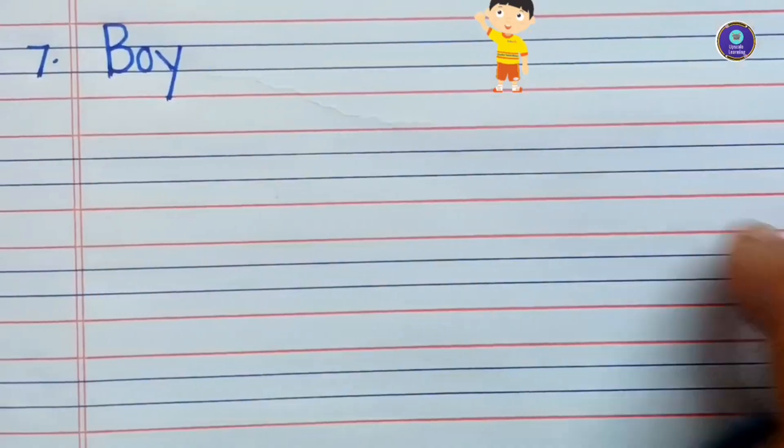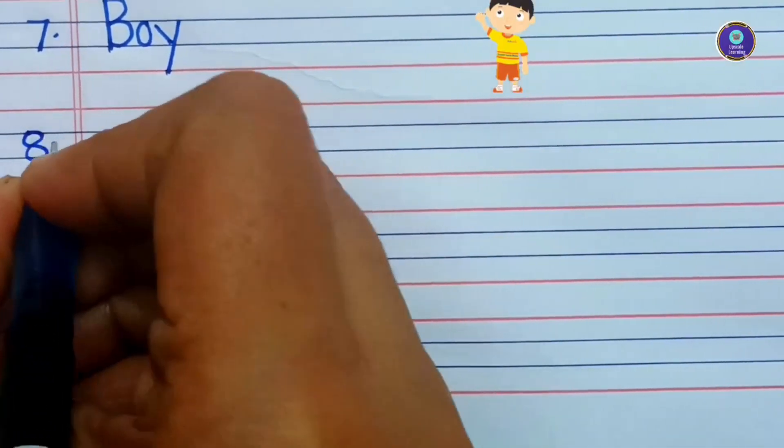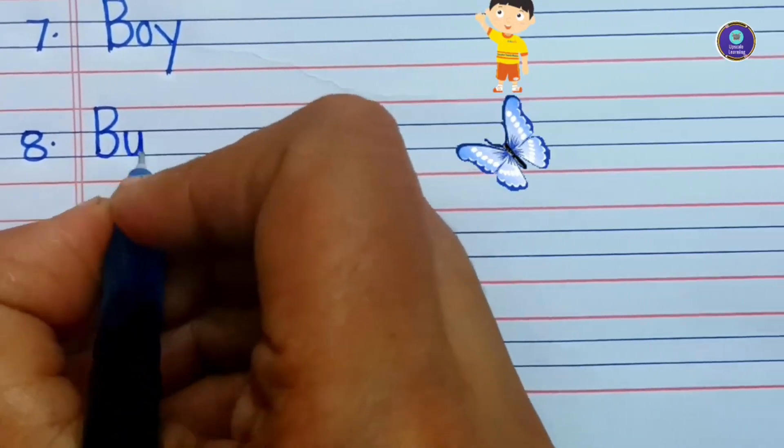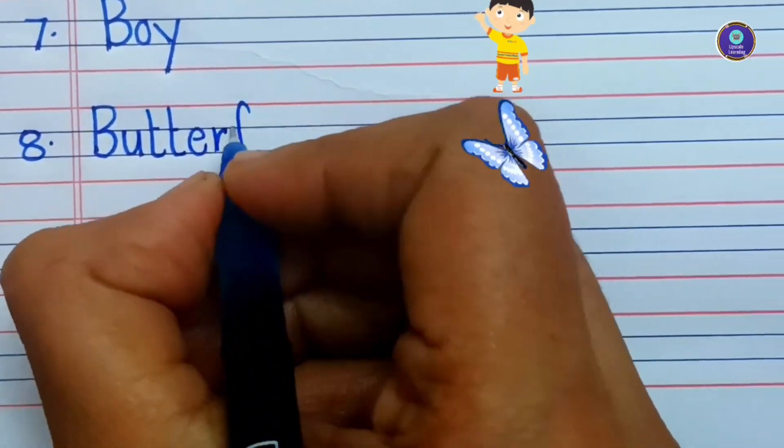Eighth one is butterfly. B-U-T-T-E-R-F-L-Y. Butterfly.